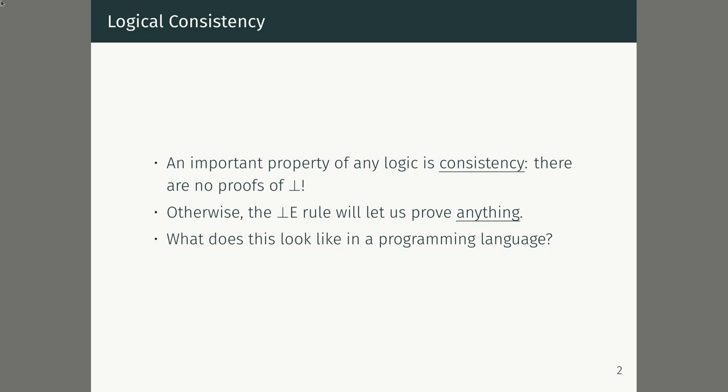If you had a proof of false, the principle of explosion — ex falso quodlibet — tells us that the bottom elimination rule would let you prove anything at all. And a logic where literally everything is provable is actually useless. But we basically never think about consistency in the context of a programming language. What could that even mean? So let's take a look at it.